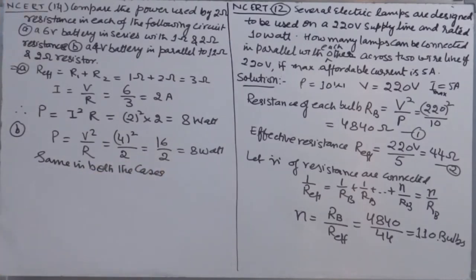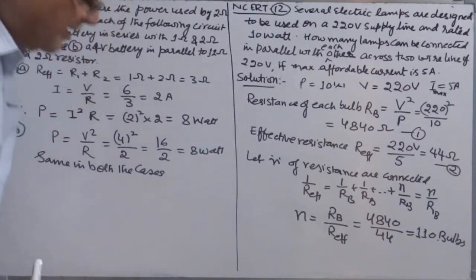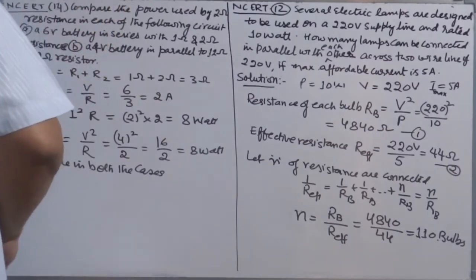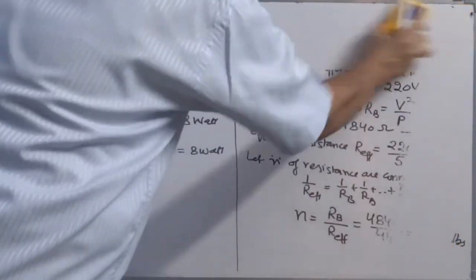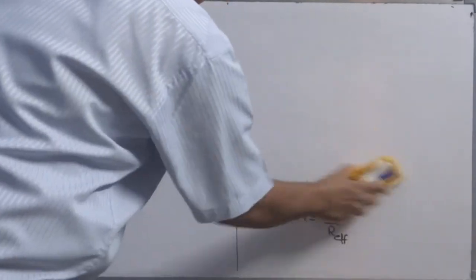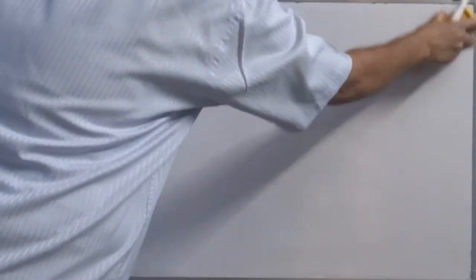To summarize: whenever series connection is there and you need to calculate power in a particular resistance, current is constant — use I²R. In parallel combination, potential difference across each resistance is the same, so use V²/R directly. No need to calculate current unless specifically asked.